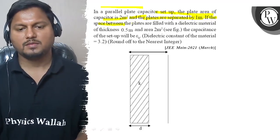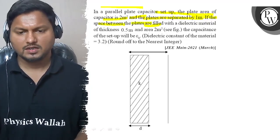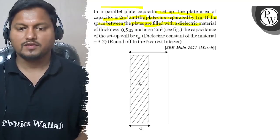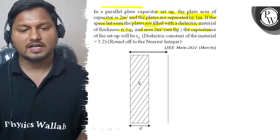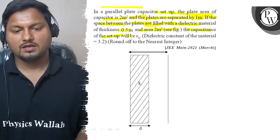If the space between the plates are filled with a dielectric material of thickness 0.5 m and area 2 m², the capacitance of the setup will be epsilon 0.